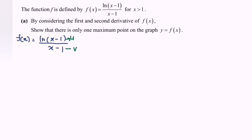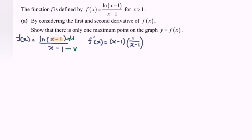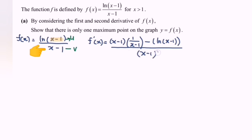So f'(x) equals v times u' — that is, (x-1) multiplied by the derivative of ln(x-1), which gives 1/(x-1). Remember to differentiate the internal function, giving 1. Minus u times v', where u = ln(x-1) and v' = 1, over v² = (x-1)². Simplifying, f'(x) = [1 - ln(x-1)] / (x-1)².